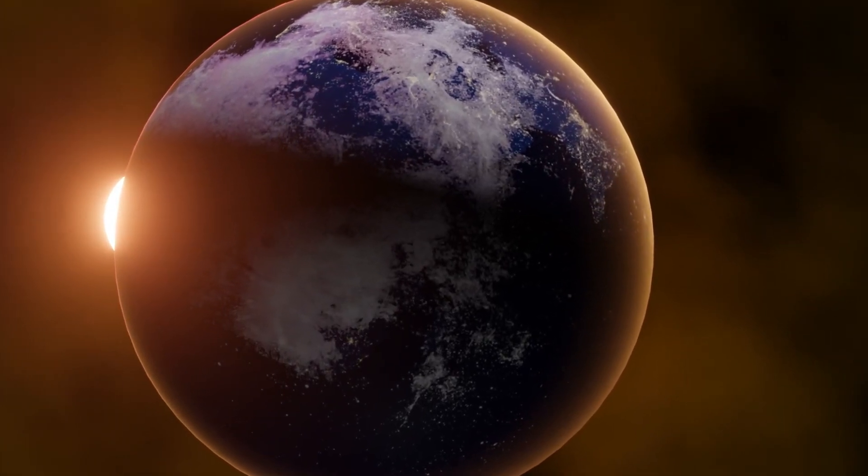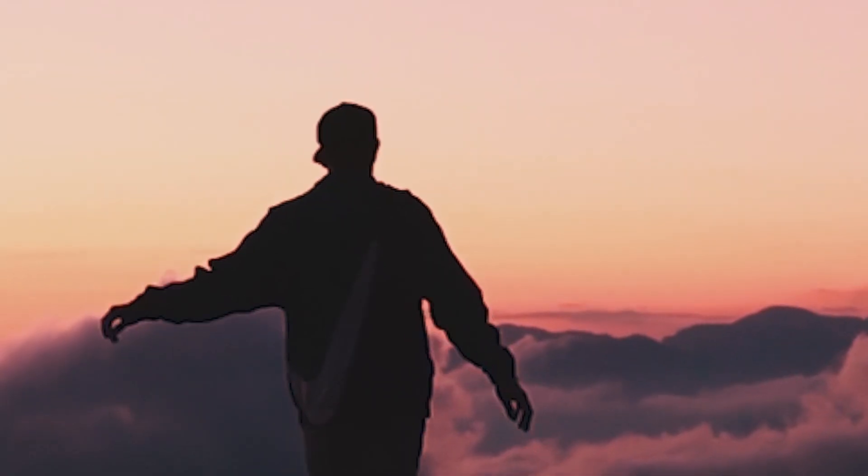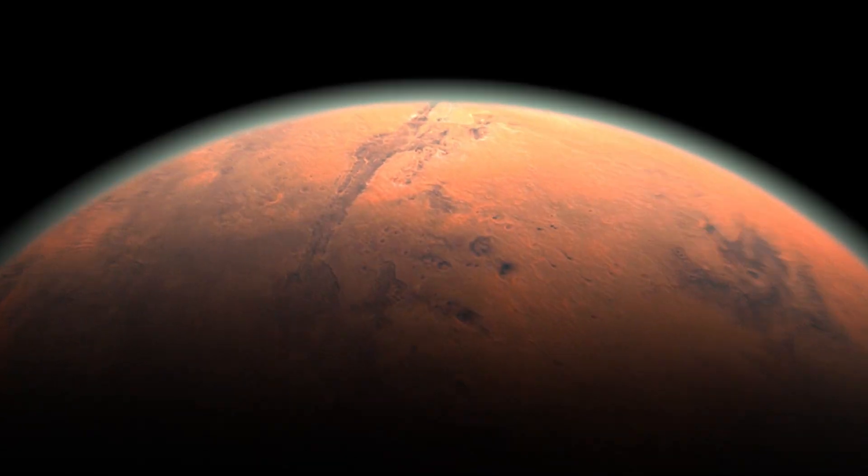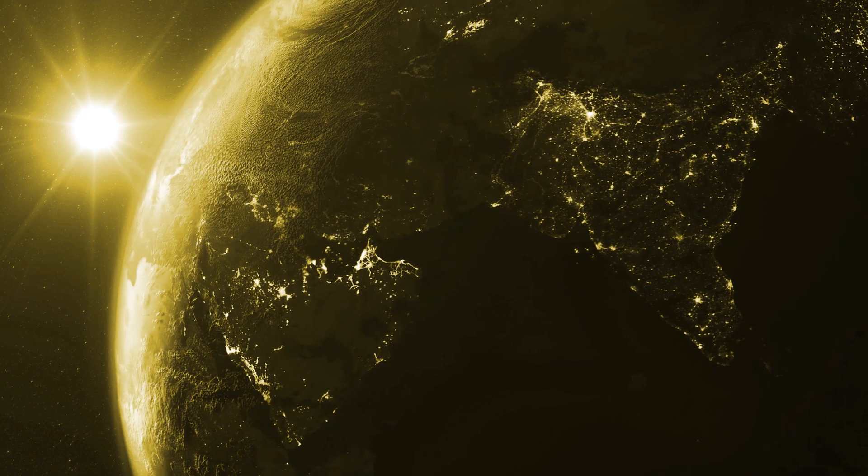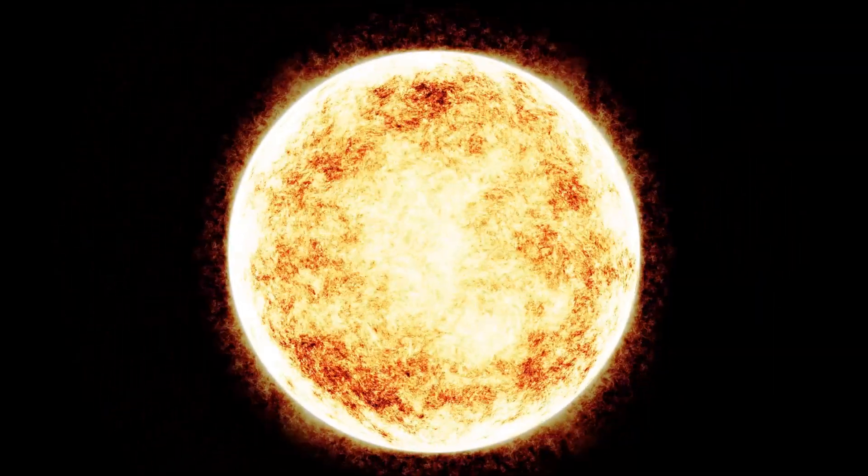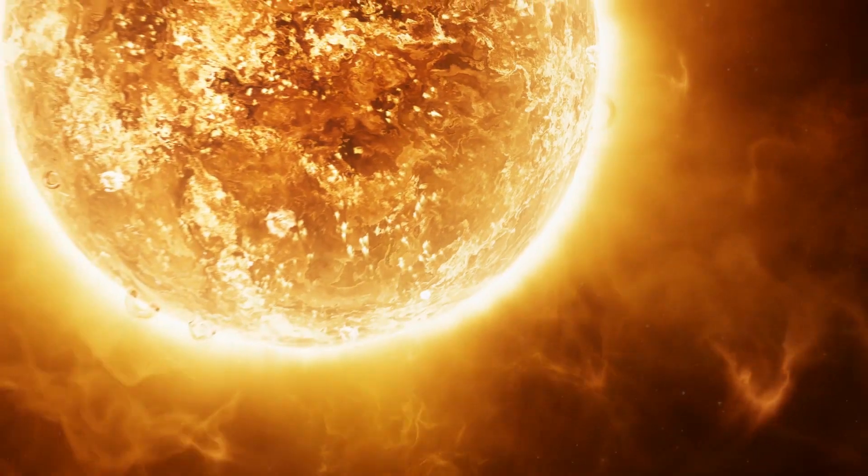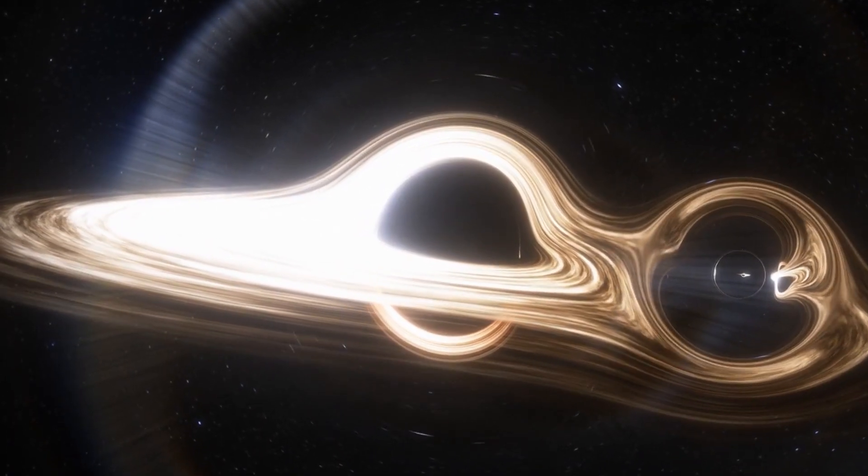What if Earth was as big as the Sun? Imagine a world where our planet had swelled to the enormous proportions of our nearest star. If Earth was as big as the Sun, it would first of all mean that our solar system would undergo a massive overhaul.